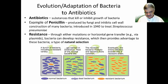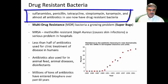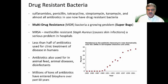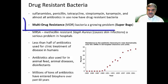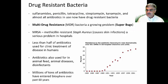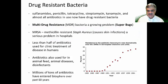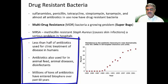The development of drug resistant bacteria is becoming a very large problem. Antibiotics you would probably recognize — penicillin, tetracycline, streptomycin — almost all antibiotics in use now have drug resistant bacterial strains. There are also multi-drug resistant bacteria, sometimes called superbugs, for which there are few remaining antibiotics that will actually work. MRSA — methicillin resistant Staph aureus — is a serious problem in hospitals; Staph aureus causes skin infections. What makes this frustrating is that less than half of the antibiotics actually made are used for clinical treatment of diseases in humans.